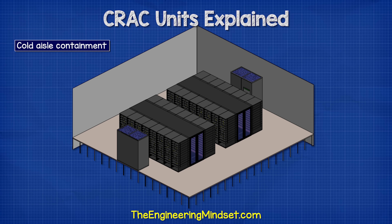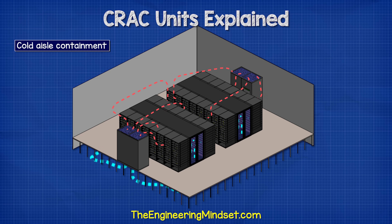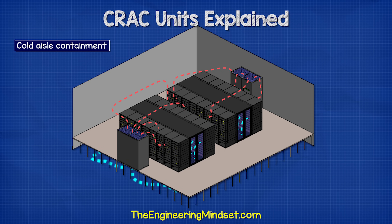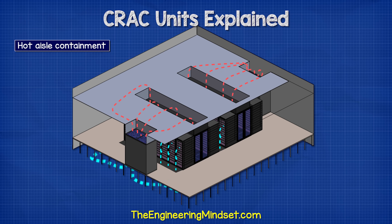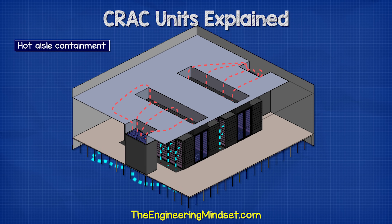For existing data centers, one of the best designs is cold aisle containment, where the cold aisle is covered with a roof and the ends of the aisles are sealed with doors. This creates a physical barrier between the aisles to prevent mixing and recirculation. Newer data centers will likely use hot aisle containment, where cold air fills the room and the hot exhaust air is contained and separated with a ceiling, then drawn directly back into the CRAC units.